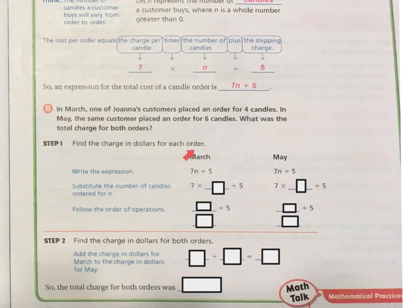Find the charge in dollars for each order. So first, we have our March. So remember, it's $7 for every candle plus the 5. And in May, again, $7 times how many candles plus 5. So we know that we're substituting in March. She bought 4 candles. So we're going to put in the 4. And then in May, it says she bought 6 candles. So we're going to put in the 6.